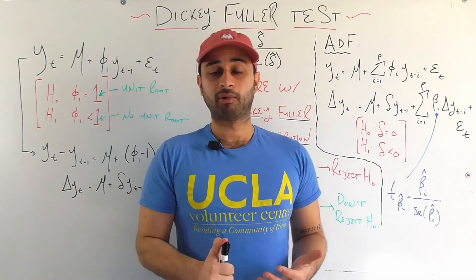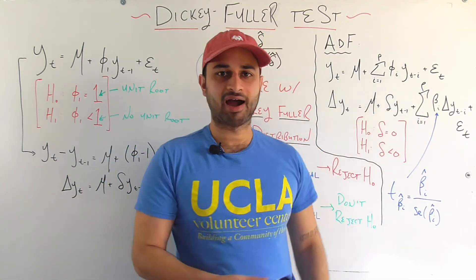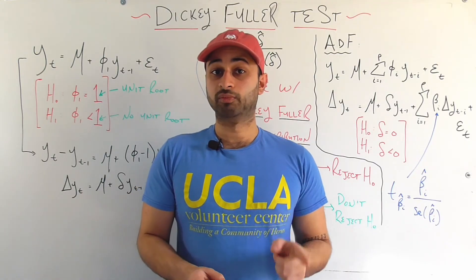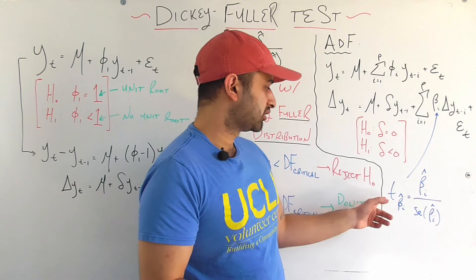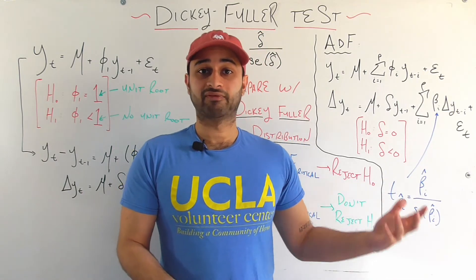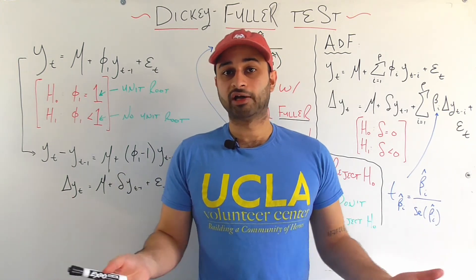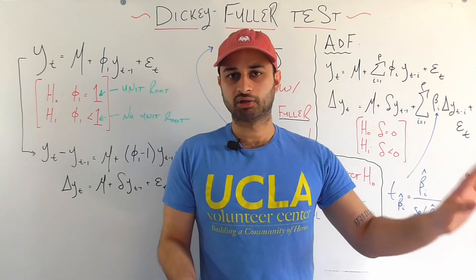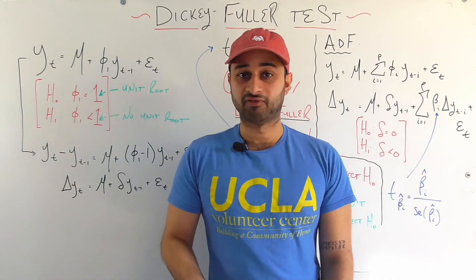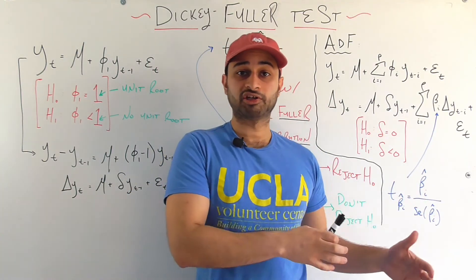One extra step with the augmented Dickey-Fuller test is that we have all the other coefficients beta_i. For those we can use a typical t-distribution — we calculate the t-stat for each beta_i as beta_i-hat divided by its standard error, compare against the critical value in the standard t-distribution, and make a conclusion about whether each is significant. So that was a high-level overview of the Dickey-Fuller and augmented Dickey-Fuller tests.